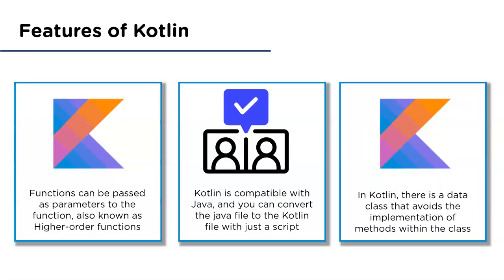In Kotlin there is a data class — a class that doesn't perform any operations and only contains state. The advantage of a data class is that it provides self-generated code and avoids the need to implement boilerplate methods within the class.